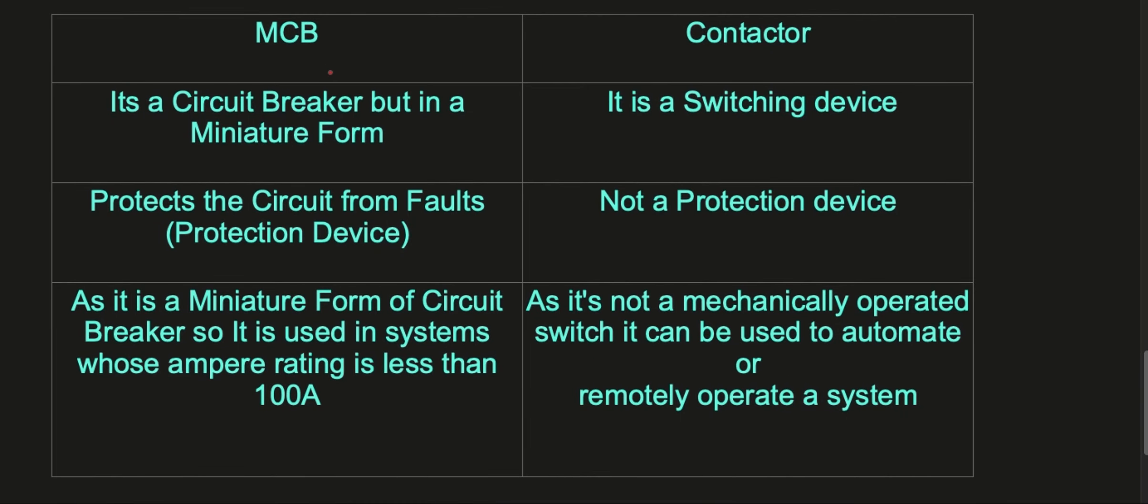The difference between MCB and contactor: MCB is a circuit breaker but in a miniature form. A very important point: MCB protects the circuit from any fault, that is from short circuit faults and overload, so it's basically a protection device. MCB is a miniature form of circuit breaker so it is used in systems whose ampere rating is less than 100 amps.